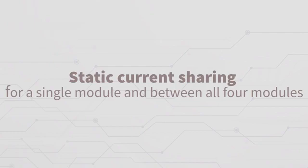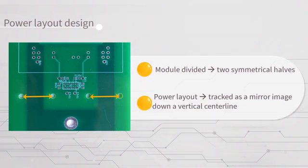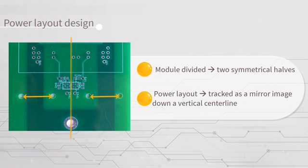Let's now talk about static current sharing for a single module and then between all four modules. The module is divided into two symmetrical halves and the power layout is tracked as a mirror image down a vertical center line.